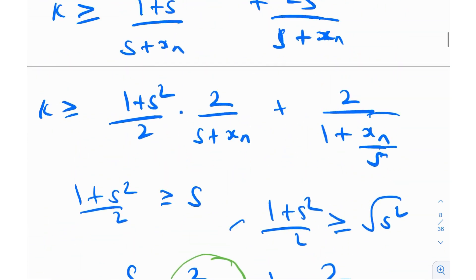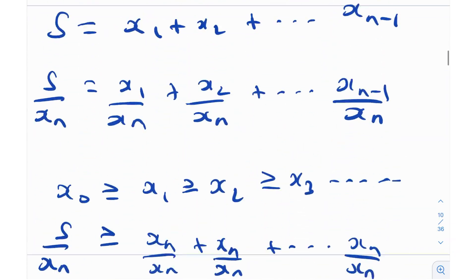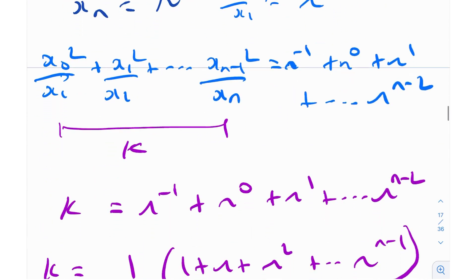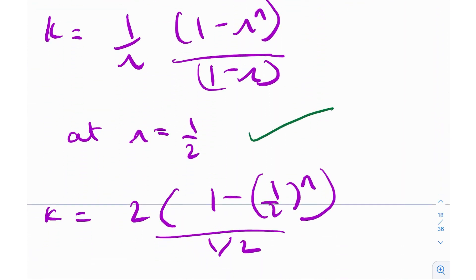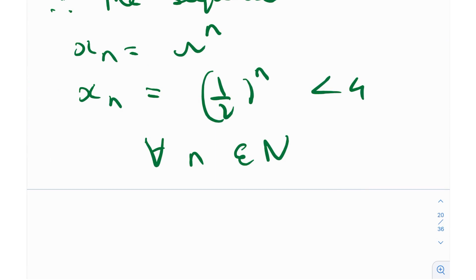Therefore, the sequence xn = (1/2)^n satisfies k < 4 for all n in the natural numbers — which is exactly what we had to find. Result number 1 is satisfied for all n ≥ 4000, and for part 2, the sequence xn = (1/2)^n works perfectly. You can also try r = 1/3, 1/4, etc., but remember r must be in (0, 1] to satisfy condition number 1. This was a fascinating application of Titu's lemma.